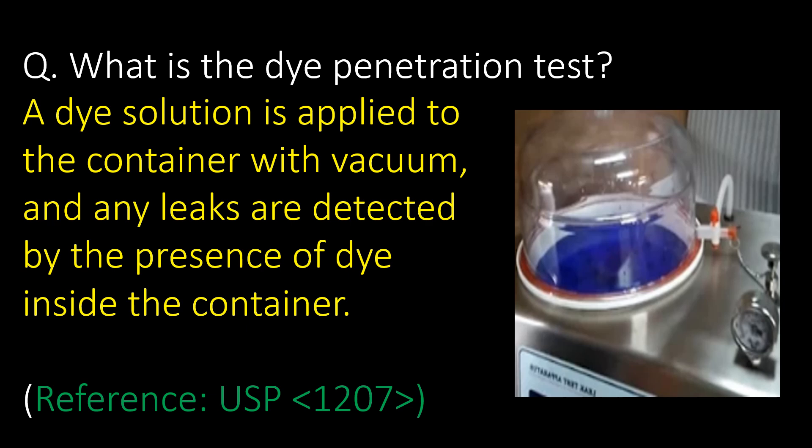What is the dye penetration test? A dye solution is applied to the container under vacuum, and any leaks are detected by the presence of dye inside the container. Reference guideline: USP Chapter No. 1207.